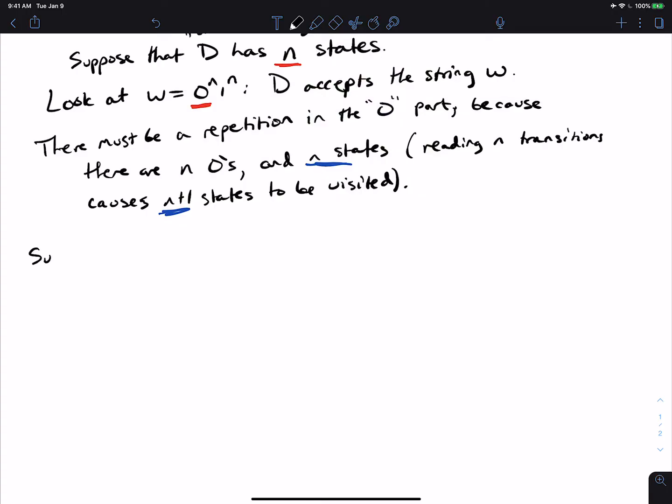So, suppose that the repetition occurs like so. I'm just going to blow up the string. It has a bunch of zeros in it and then a bunch of ones. So let's say that somewhere in here, this part is the repeat part.